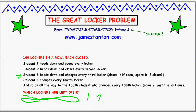All the lockers whose numbers were square numbers are the ones that were left open. Do watch that video — it's actually really quite exciting. What I'd like to do in this second follow-up video is try to explain why the square numbers appear.